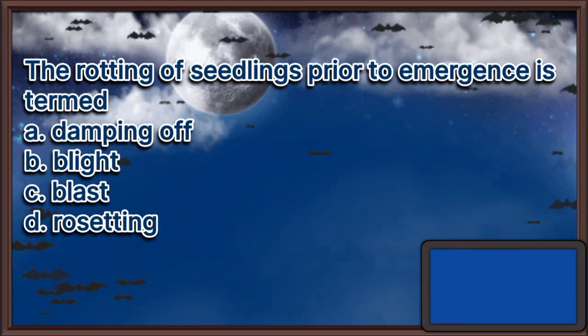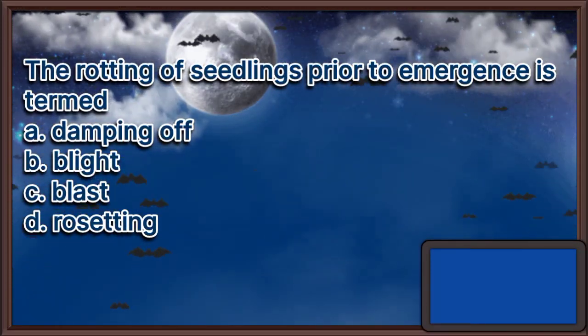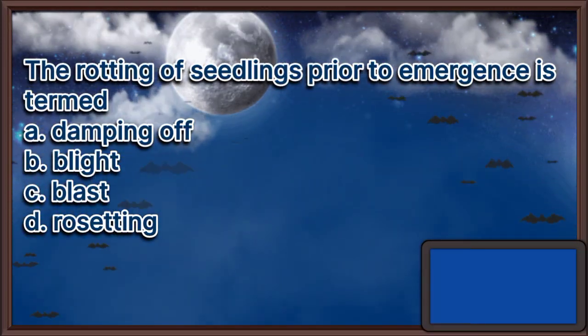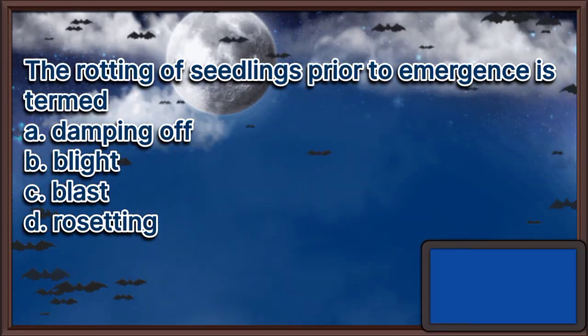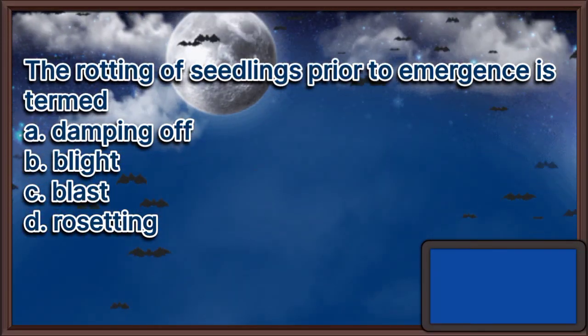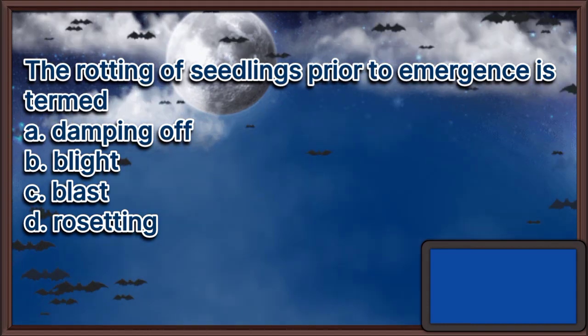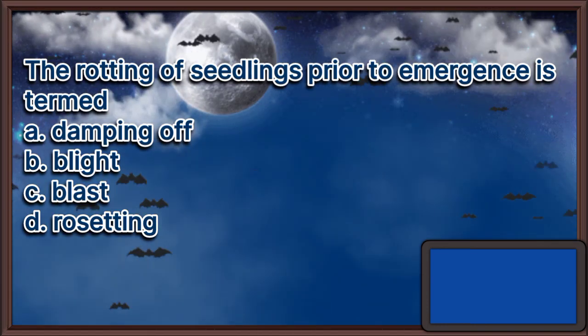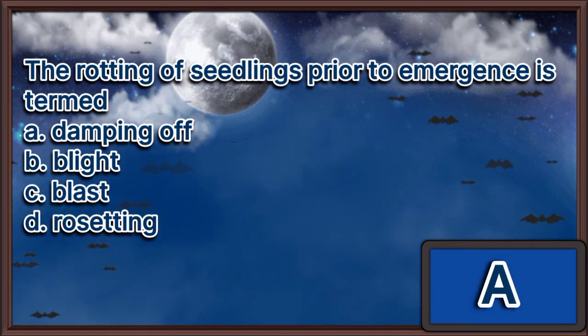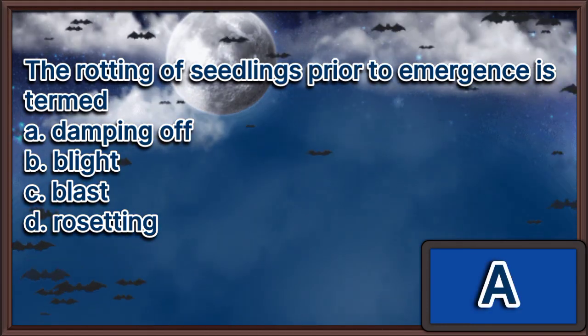The rotting of seedlings prior to emergence is termed. A. Damping off. B. Blight. C. Blast. D. Rosetting. The answer is letter A.